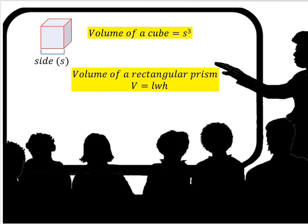The volume of a cube is an easy one — it's the side cubed. So if this side were 3 centimeters, the volume would be 3 times 3 times 3. Three times 3 is 9, times 3 is 27. It would be 27 centimeters cubed.